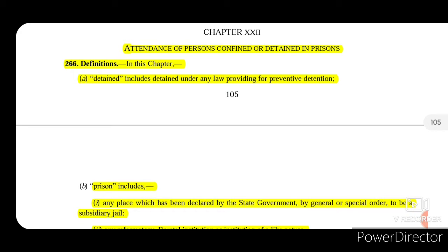Section 266 talks about the definitions in this chapter. It says 'detained' includes detained under any law providing for preventive detention. Detained, as we know from the dictionary meaning, means to confine or restrain a person into a particular place, and it includes under this chapter any detention that is under any law provided for preventive detention.